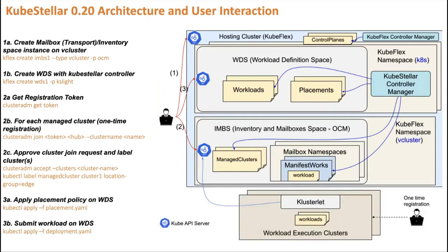Moving on to the concrete architecture for release 0.20 — after seeing the abstract architecture, I want to give a more concrete view. We're moving to 0.20 because this is the updated architecture. The user experience and API are pretty much the same — you can apply a placement, apply workloads on the WDS and deliver them — but what changes is simplifying how you set up, install, and operate the system. After installing KubeFlex in one step using a helm chart or the kflex CLI on a hosting cluster such as kind, Kubernetes, or OpenShift, you have a running hosting cluster.